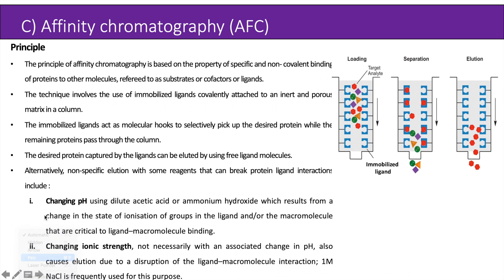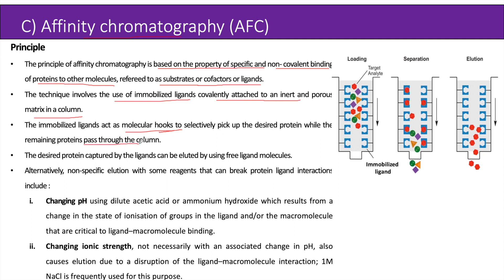The next type of chromatography is affinity chromatography. The principle is based on the property of specific and non-covalent binding of proteins to other molecules referred to as substrates, cofactors, or ligands. The technique involves the use of ligands covalently attached to an inert and porous matrix in a column. The immobilized ligands act as molecular hooks to selectively pick up the desired protein while the remaining proteins pass through. The desired protein captured by the ligands can be eluted by using free ligand molecules.